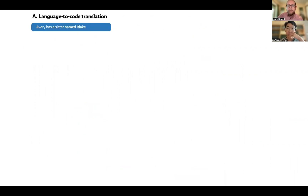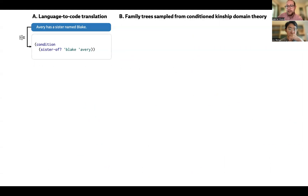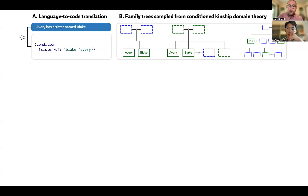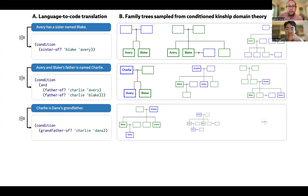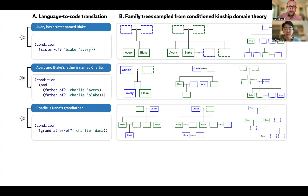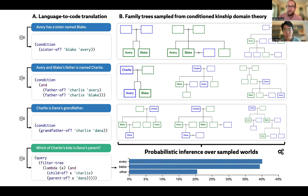From this, we derive a discourse model over the kinship domain that showcases relational reasoning. Observations translate into conditioning statements that constrain the generative model to produce only family trees where, for example, Avery has a sister named Blake. As we translate additional observations, the generative model forms a more and more specific picture of this particular family. A query like 'which of Charlie's kids is Dana's parent?' is then evaluated against many sampled trees to form a probabilistic picture. At this point in the example, it could be either Avery or Blake, with some outside possibility that Charlie has some other unmentioned child — an inference already beyond the scope of deductive logic.